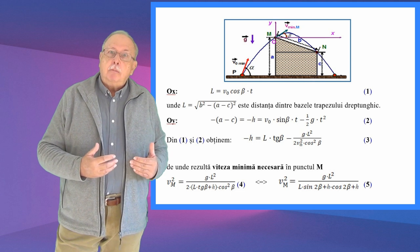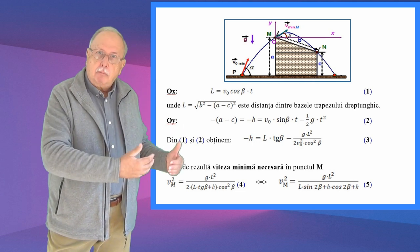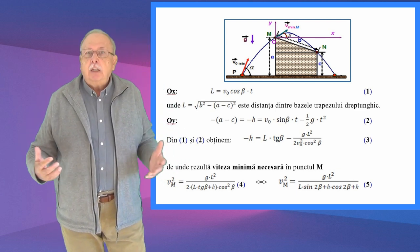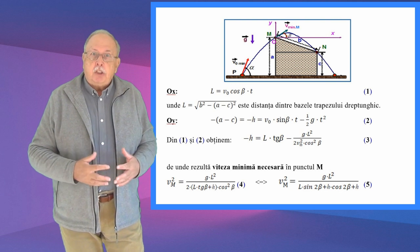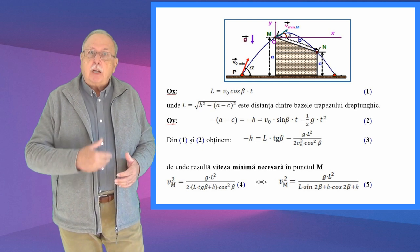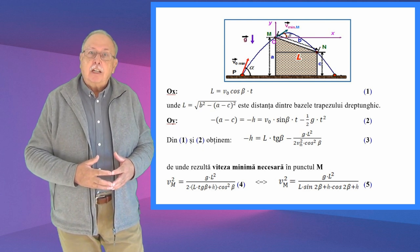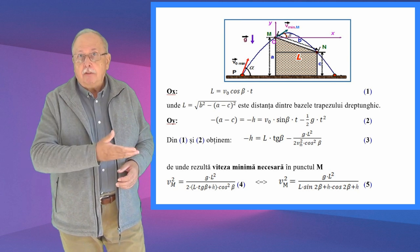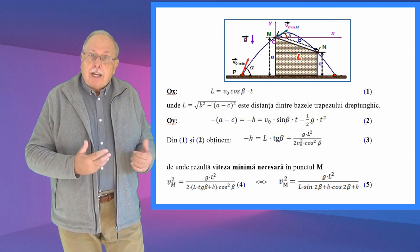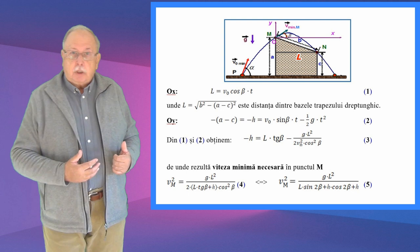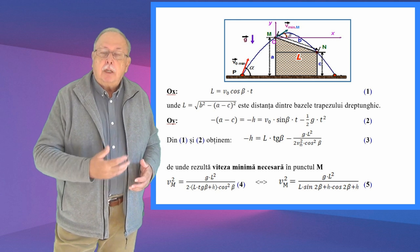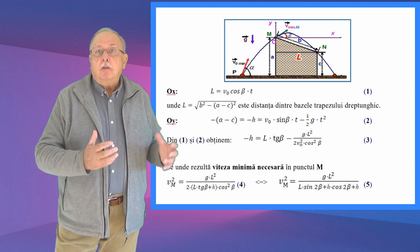Dacă ne gândim acum doar la mișcarea care începe în punctul M, putem considera că viteza în punctul M este viteză inițială V0. Pentru mișcarea pe direcție orizontală, adică de-a lungul axei OX, ecuația de mișcare este L egal cu V0 cosinus de beta, proiecția vitezei pe direcția orizontală, înmulțit cu T. Unde L este distanța dintre bazele trapezului dreptunghic și se calculează cu teorema lui Pitagora: L egal cu radical din B pătrat minus (A minus C) la pătrat.